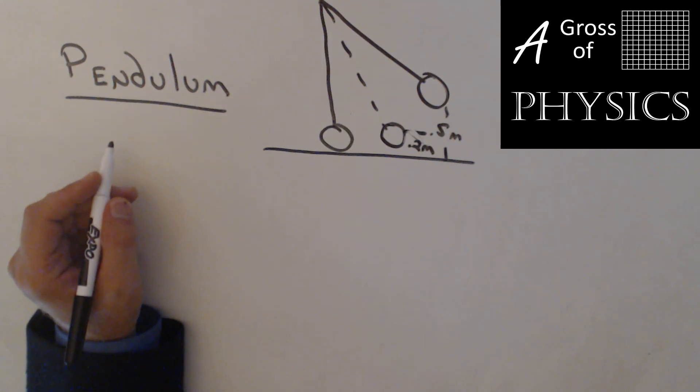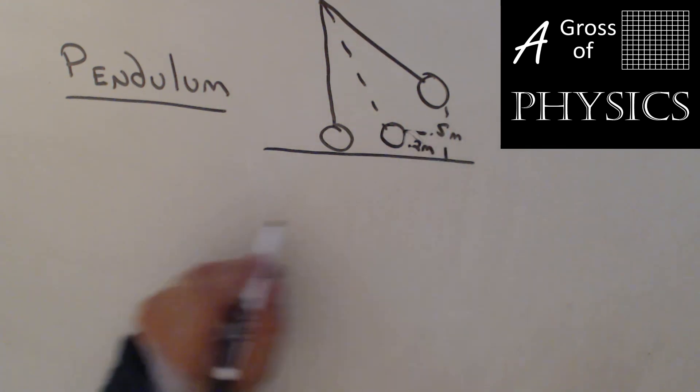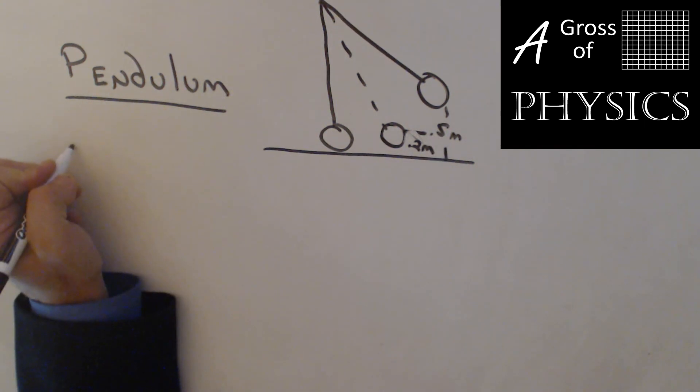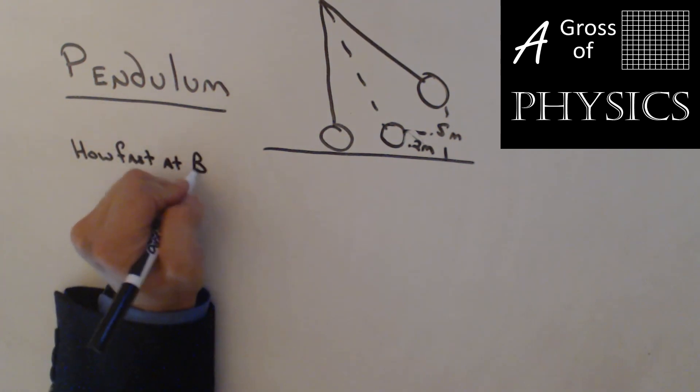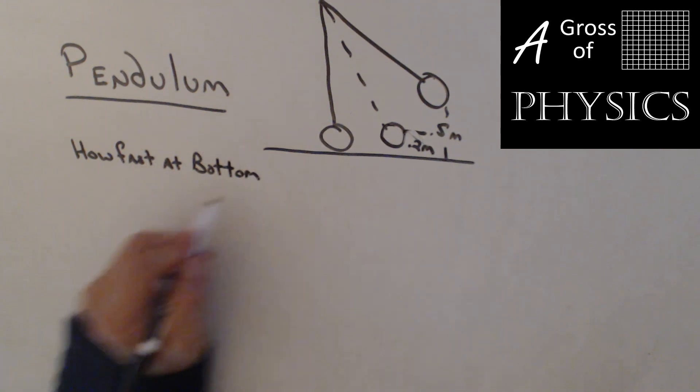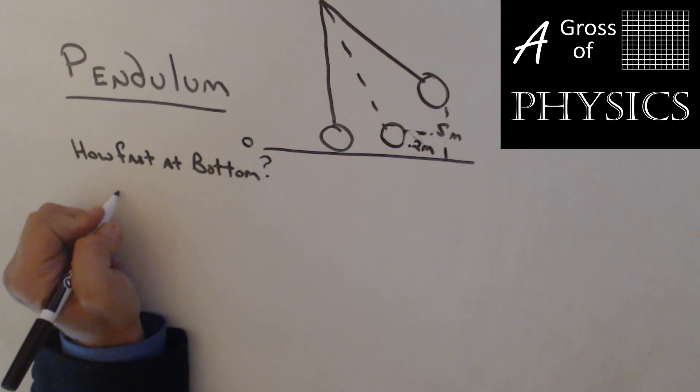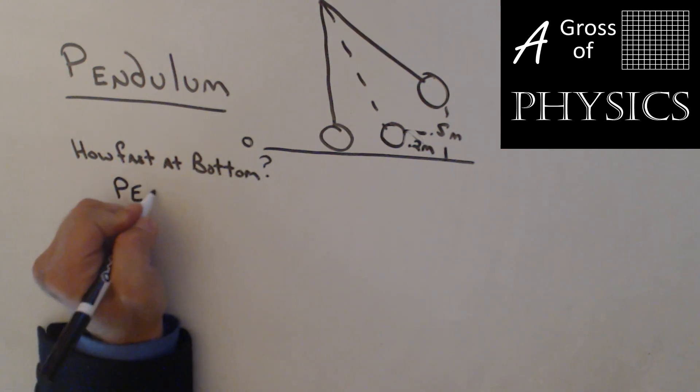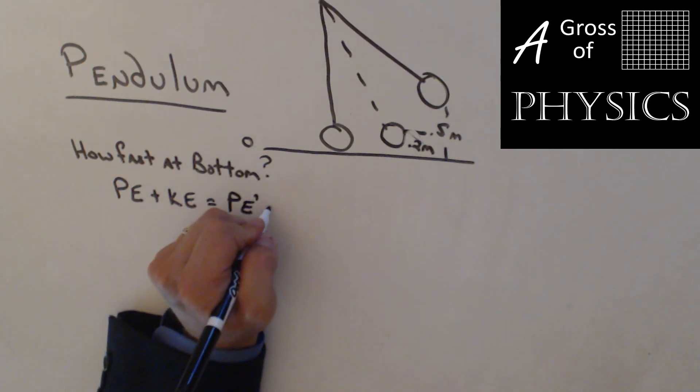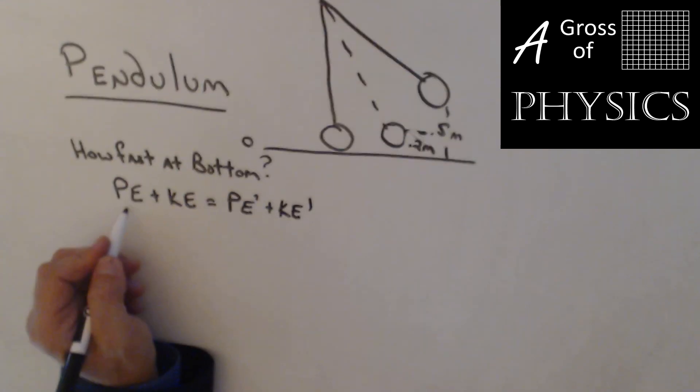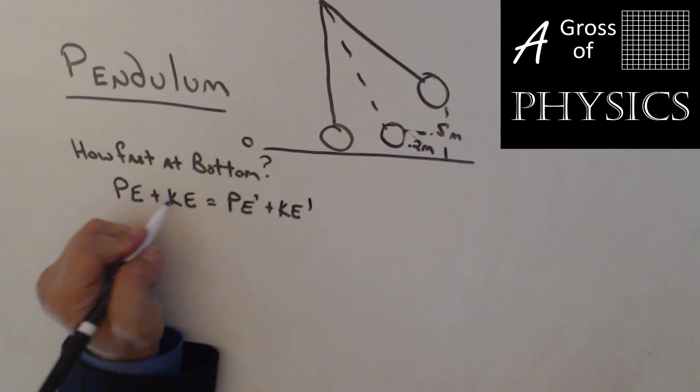Here's a pendulum problem dealing with energy. We're going to look at a pendulum that is pulled back to a height of 0.5 meters, and we want to find how fast at the bottom. Now at the bottom, we are going to call that zero height. So that means at the top it has potential, and it does not have kinetic, because it's going to be stationary at the top of its flight. So in terms of PE-KE, we're going to cancel out the KE term in the initial.